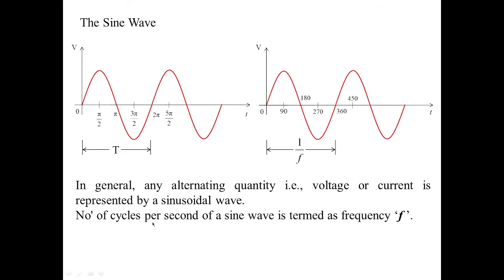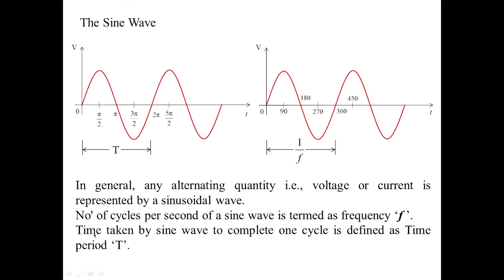The number of cycles per second of a sine wave is termed as frequency. The time taken by a sine wave to complete one cycle is defined as time period. So whatever things we have seen in the graph, we have now defined in technical terms.